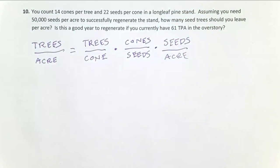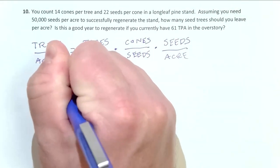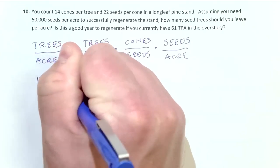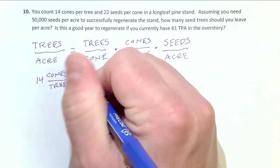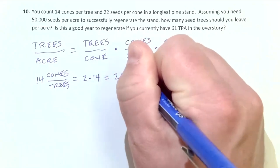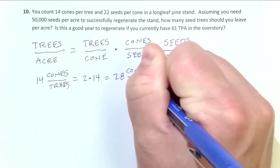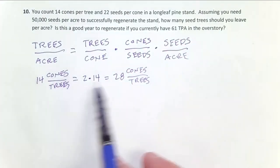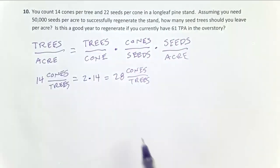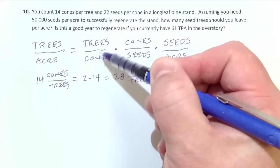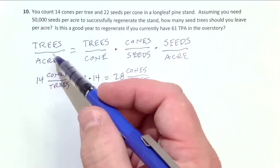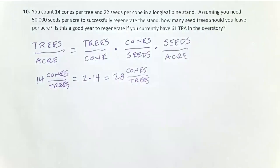There's one implied step not listed anywhere. From the literature, we know that when you stand and look through binoculars, you only observe about half the cones in a tree. So we always take our observed 14 cones per tree and double it — it really equals 2 times 14, which equals 28 cones per tree. This is the most common mistake on these problems: forgetting to double the cone count. I'll always give you the observed binocular count, and you always need to remember to double it. Using 1 over 14 instead of 1 over 28 would essentially double the estimated trees per acre over what you really need — so don't make that mistake.